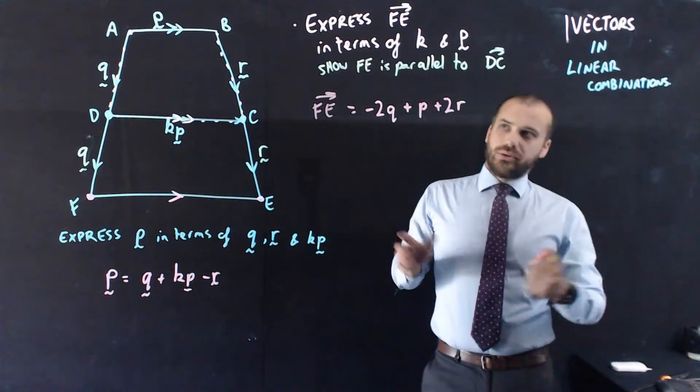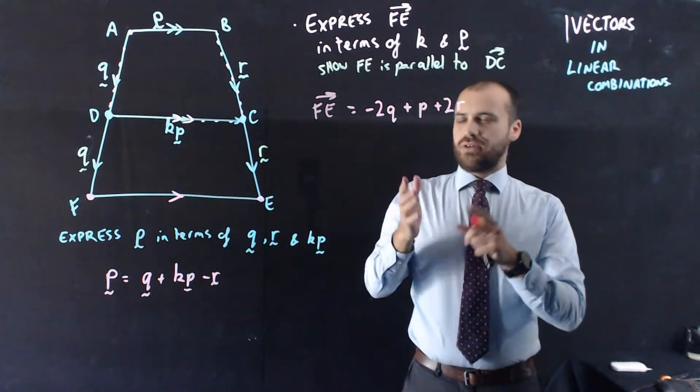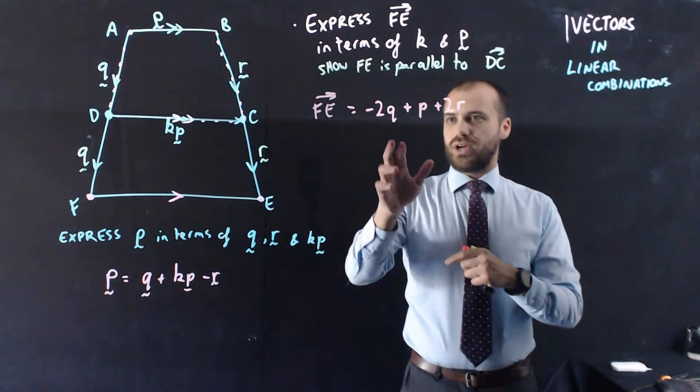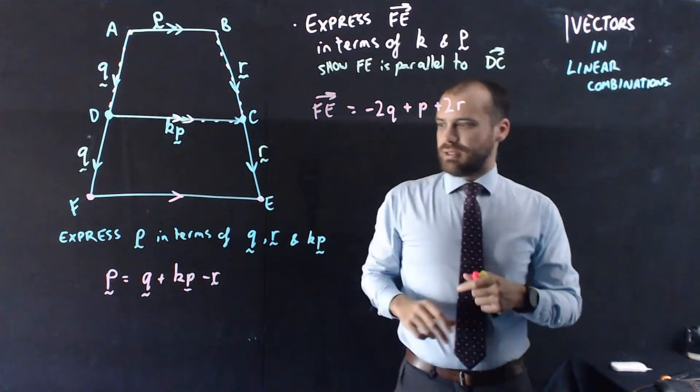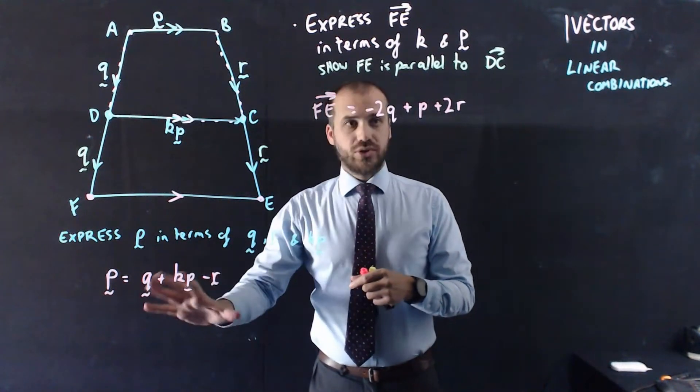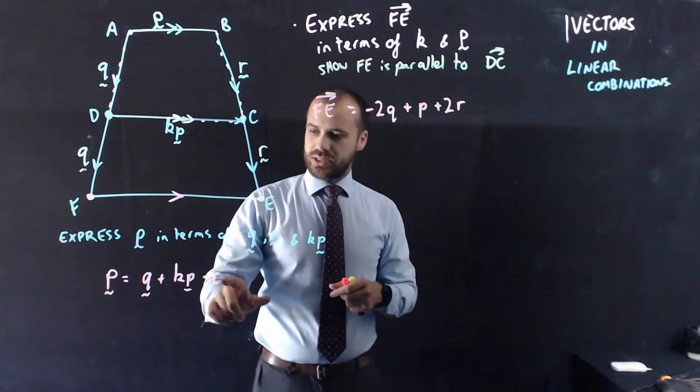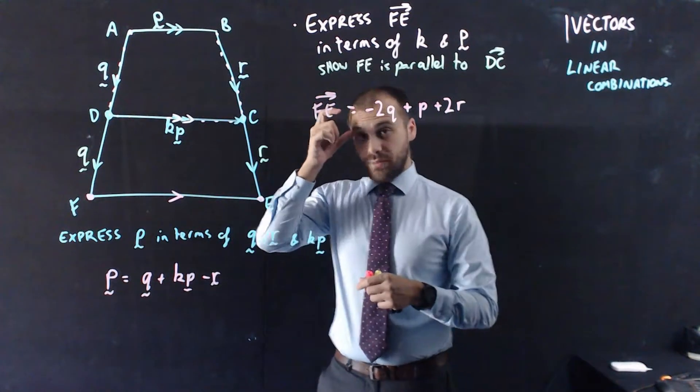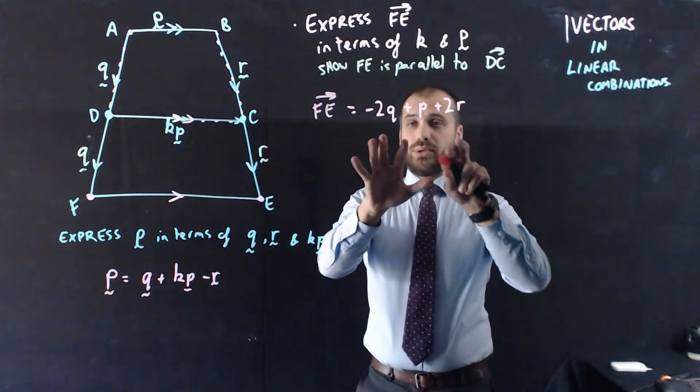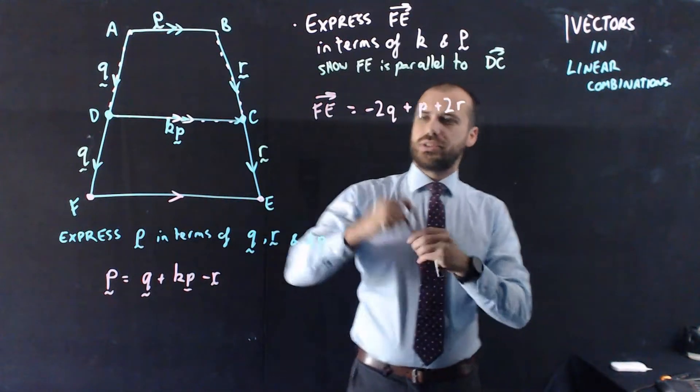Okay, small problem though, because I want to express it in terms of K and P, and I haven't done that yet. I've expressed it in terms of Q, P, and R. Now, luckily, I've got this that I've already worked on a little bit. So I know that P is equal to Q plus KP minus R. Now I need to somehow get rid of Q and R from this. Alright, so I'll just work through this a bit.